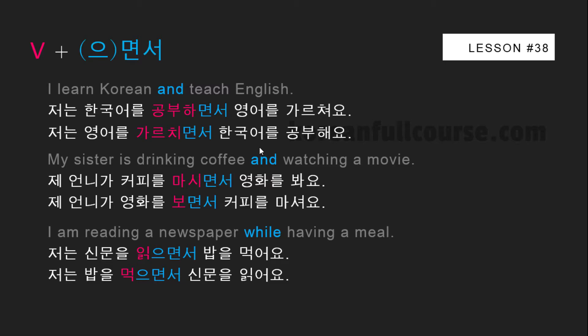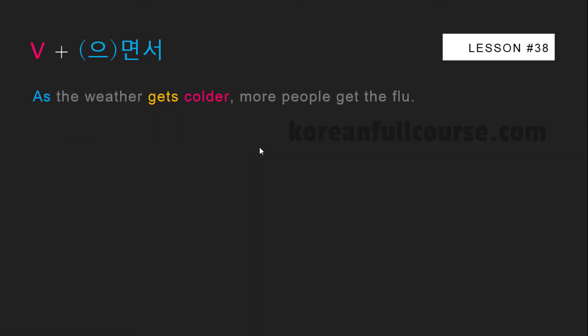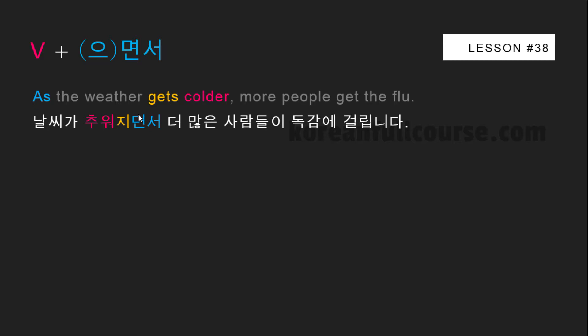Let's look at one such case: 'As the weather gets colder, more people get the flu.' In this sentence, two actions also occur simultaneously. However, unlike the previous examples, there is a dependence — the number of people who get the flu depends on how cold the weather is. The colder the weather, the more people get the flu. 날씨가 추워지면서 독감에 걸리는 사람들이 많아집니다.